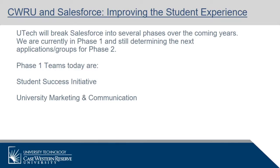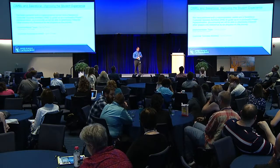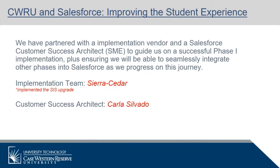Today we're in our phase one. We know this is going to take several years. Phase two is still being determined at this time. But our phase one best move was to look at university marketing communications and our student success initiative. To ensure that is successful, UTEC and Case Western Reserve decided to invest in an implementation vendor, Sierra Cedar — they helped with our assist upgrade — and the Salesforce CSA, our customer success architect. Their goal is to keep us from going down a pigeonhole of coding, so that in our next phase we can adapt and plug in additional capabilities.